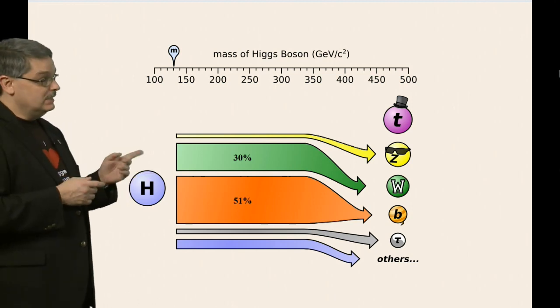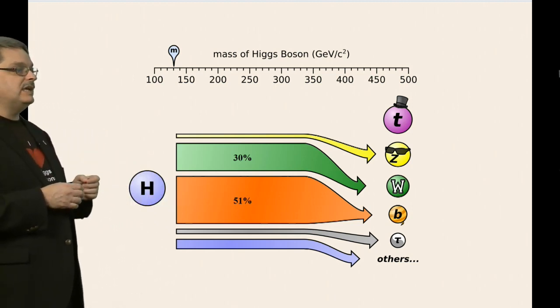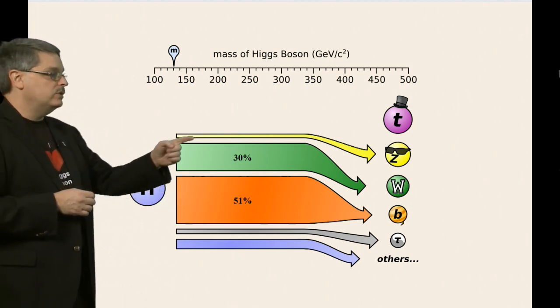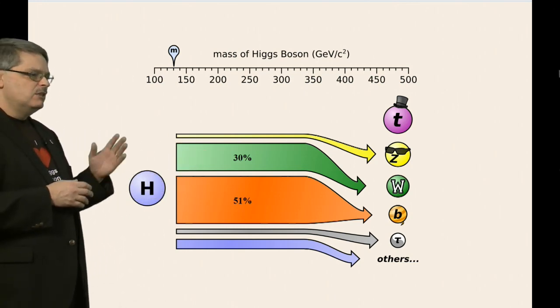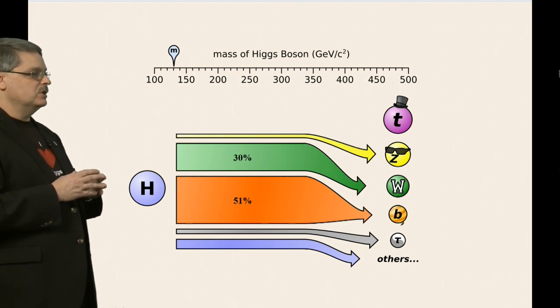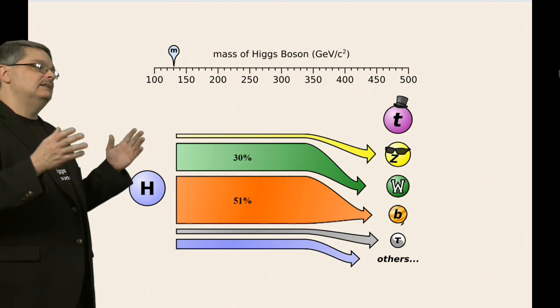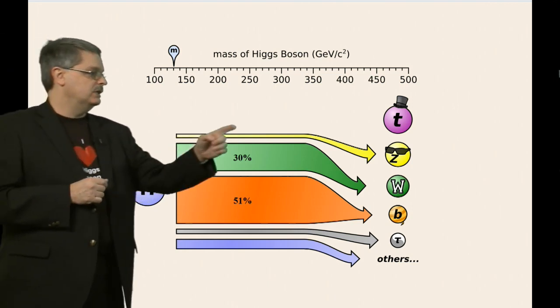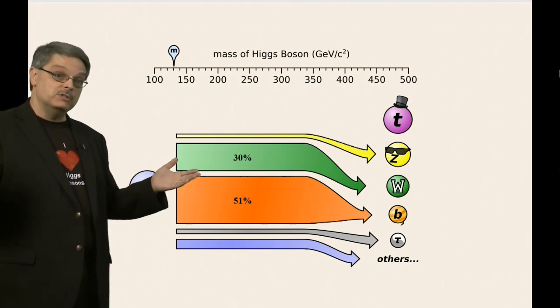For instance, we see in this example that there is a 51 percent chance that a Higgs boson will decay into a pair of bottom quarks, with a 30 percent chance that it will decay into a pair of W bosons. There is a much smaller chance that an individual Higgs boson will decay into a pair of Z bosons or tau leptons, and a negligible chance that it will decay into top quarks.